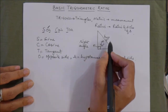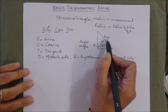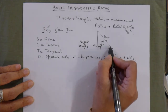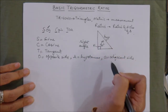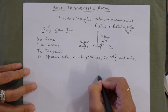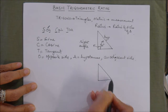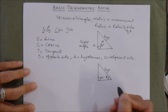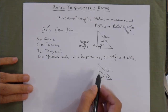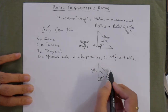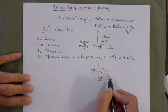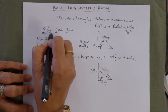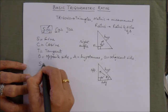In a right triangle, the hypotenuse is always the side opposite to the 90-degree angle. We need to identify which is the opposite side and which is the adjacent side. Other than 90 degrees there are two angles, and for each angle we write the opposite and adjacent side differently. For angle theta, the side opposite to theta is the opposite side, and the remaining third side is the adjacent side.